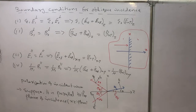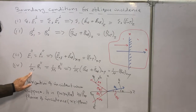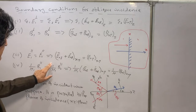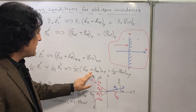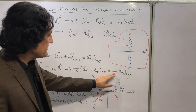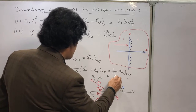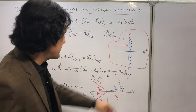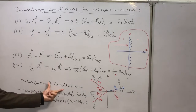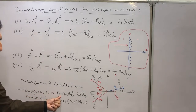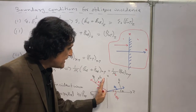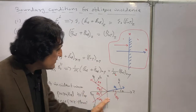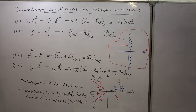Similarly for the magnetic field, B₁∥ = B₂∥, which gives B₀ᵢ plus B₀ᵣ in the x-y plane equal to (1/μ₂)·B₀ₜ in x-y. The polarization of the incident wave is parallel to the plane of incidence, which we take as the x-z plane. This gives us the full set of boundary conditions for this configuration.